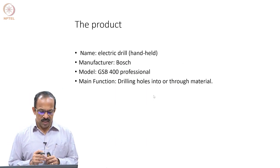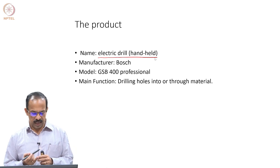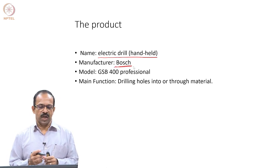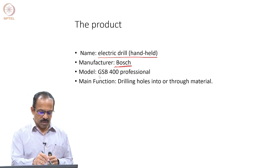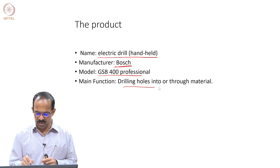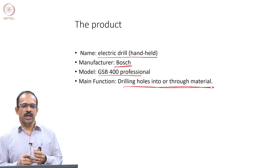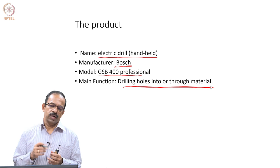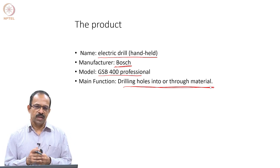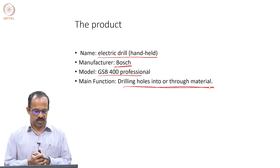This product is an electric drilling machine, which is a handheld machine, manufactured by the company Bosch. The model is GSB 400 Professional, and the main function is drilling holes into or through material — it can be either metal, wood, or any other material.